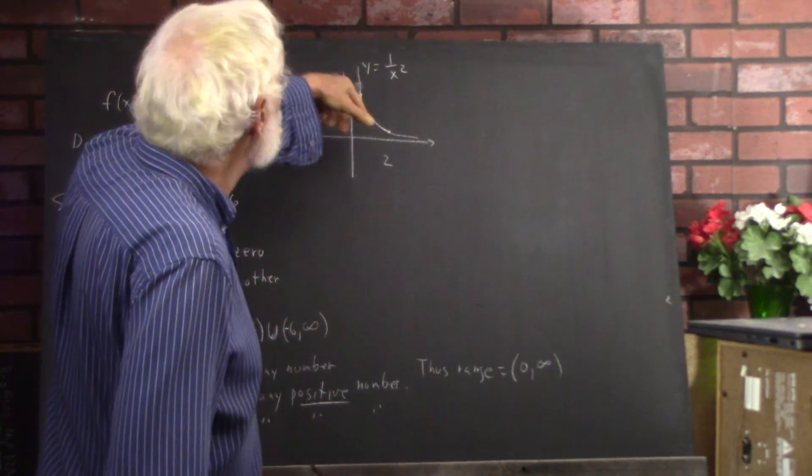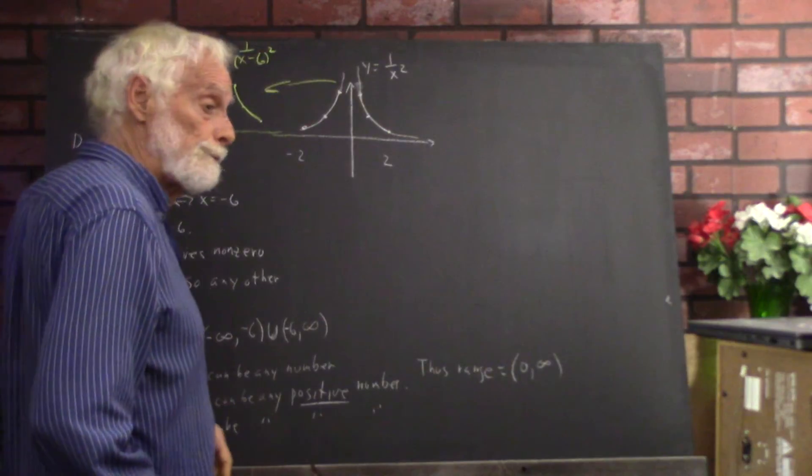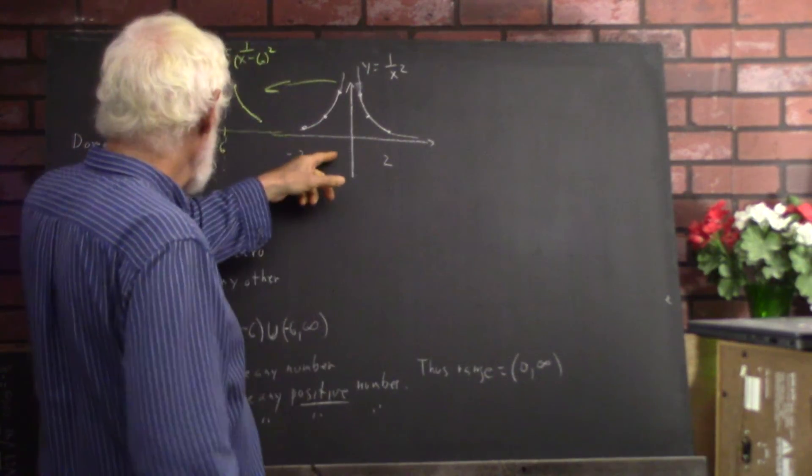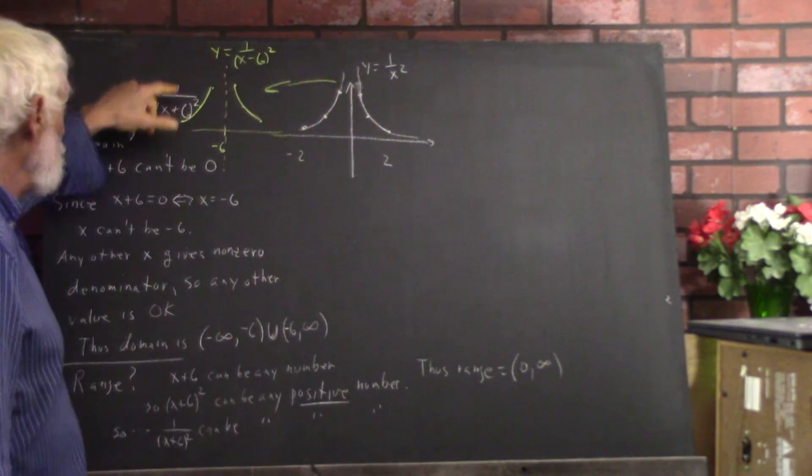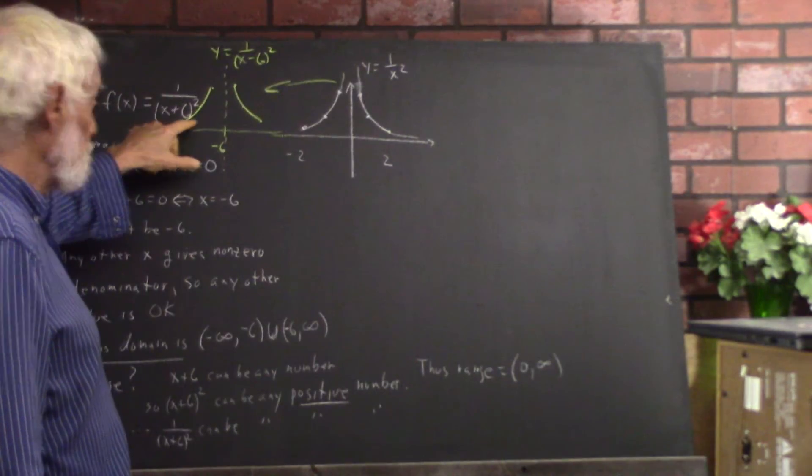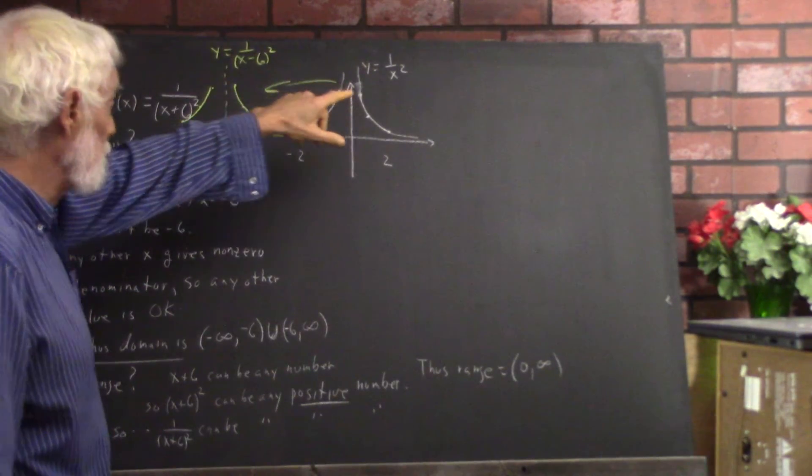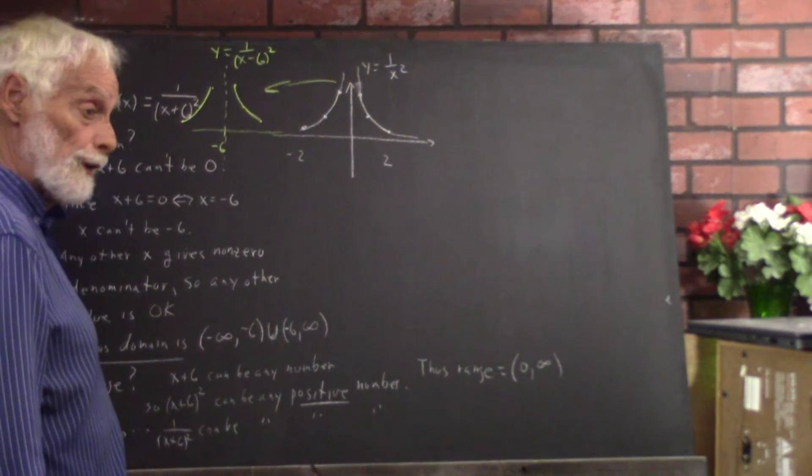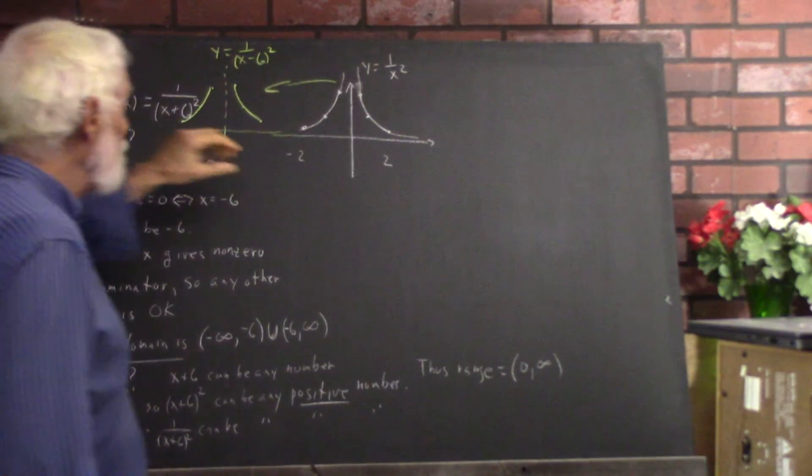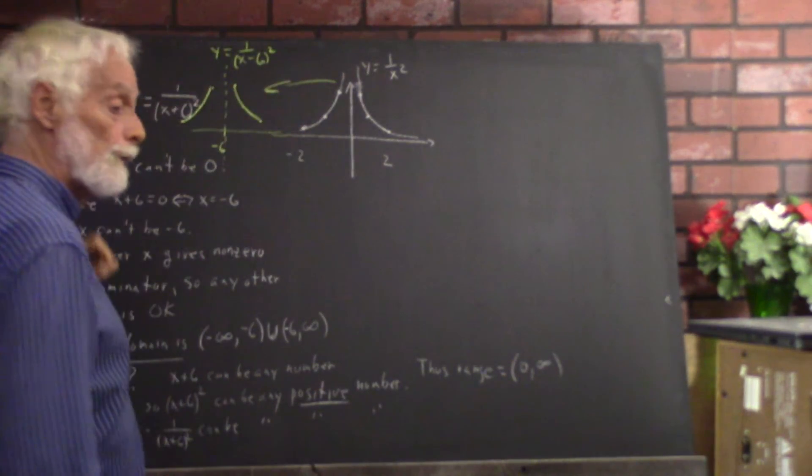Now side note, if you get the graph of your reciprocal square function, it turns out that the graph of 1 over x plus 6 squared, which is just like 1 over x squared, but you replace x by x plus 6, is just shifted 6 units to the left.